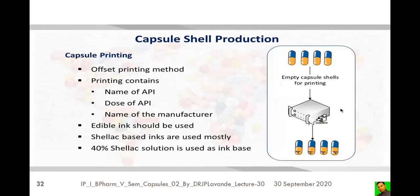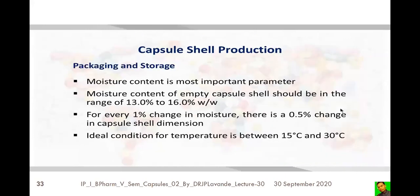After sorting, capsule shells are subjected to printing, generally using the offset printing method. They are printed with the name of the API, dose, name of the manufacturer, or any other labeling requirements. Edible ink must be used — shellac-based inks are used mostly, with a 40% shellac solution used as the ink base for printing capsule shells.